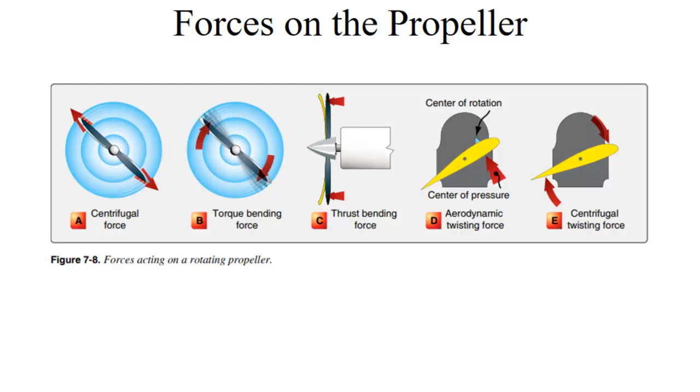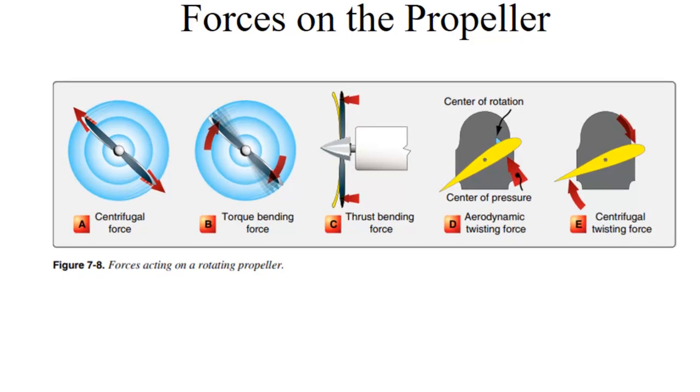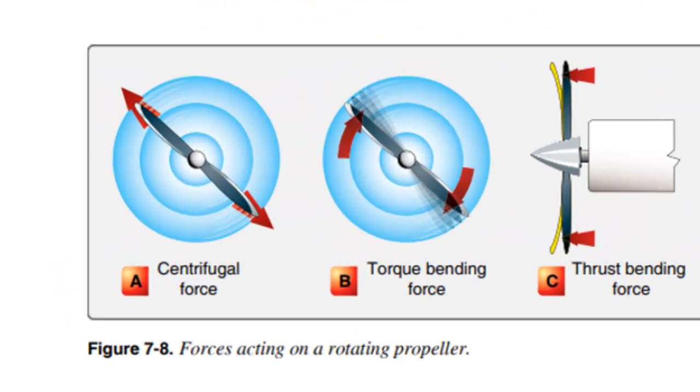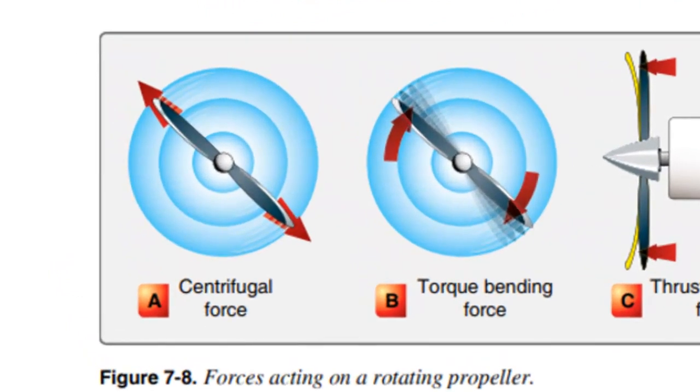There are a number of forces on a propeller, and this applies to rotor blades as well. There's centrifugal force, which is an imaginary force. It's actually centripetal force. We're pulling on the blade inward in order to keep it attached to the hub. But it's significant. It's on the order even for a moderately sized general aviation propeller. It can be on the order of 6,000 pounds.